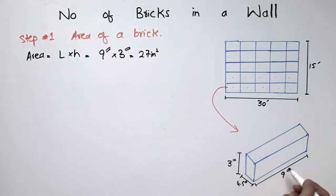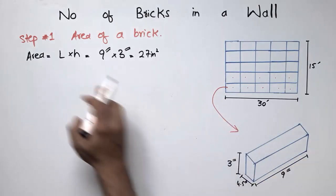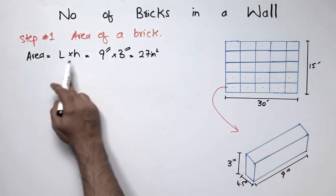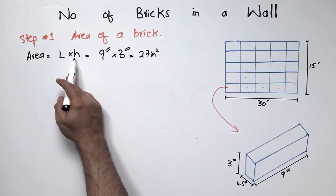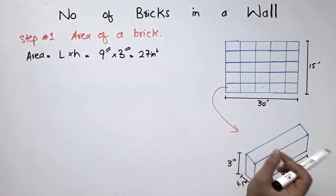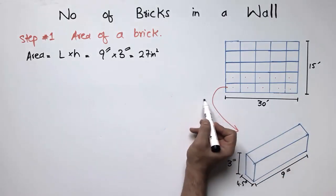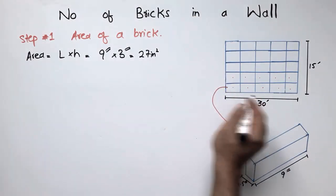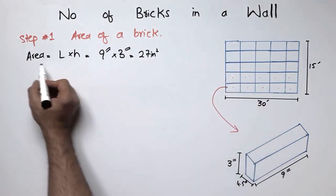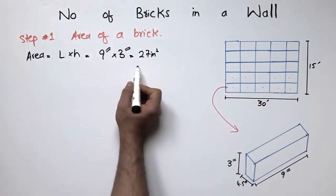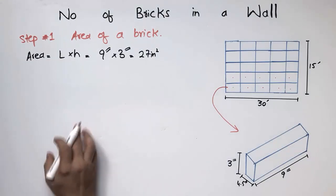You should know why I used length times height rather than height times width. It is because I want to find the number of bricks along the length and along the height. That is why length and height are used in the calculation of area.